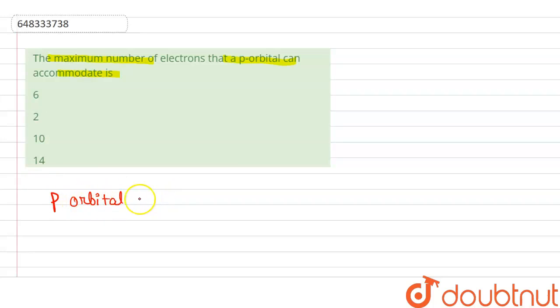Suppose this is p orbital, one, two. So how many electrons we can add? First of same spin, then of opposite spin. So it is how much? Is equal to how many electrons? One, two, three, four, five, six. So six electrons a p orbital can accommodate.